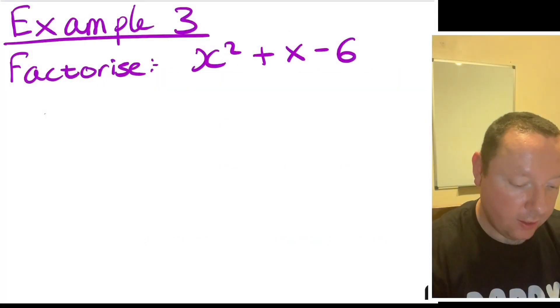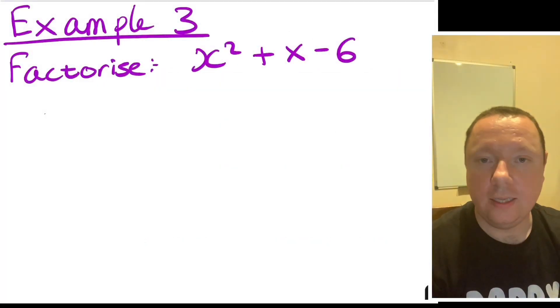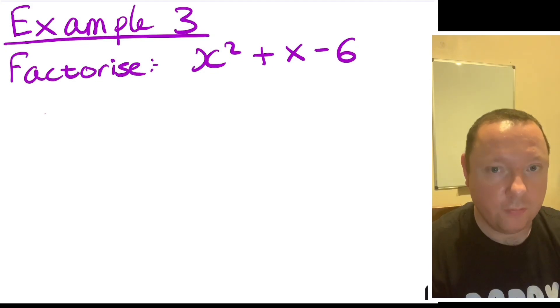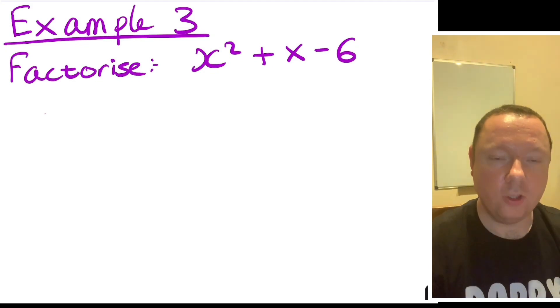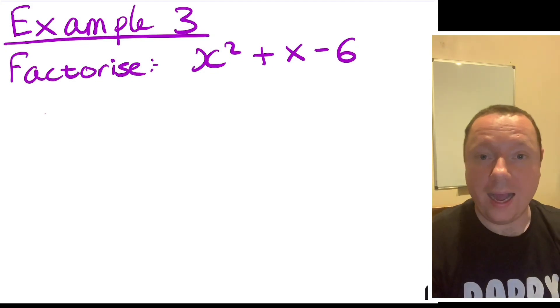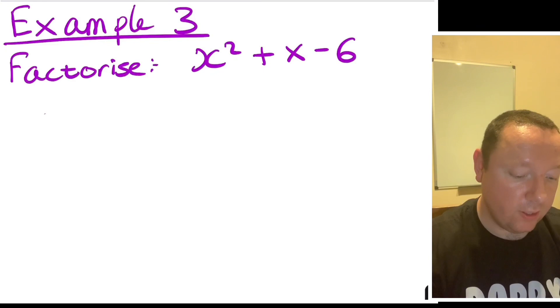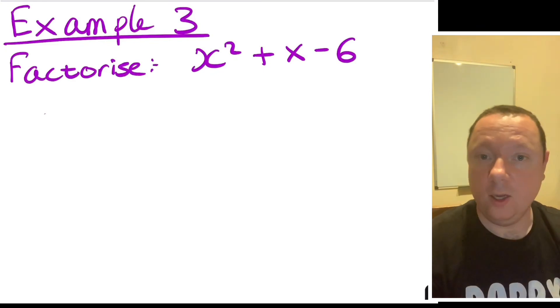Now Example 3: factorise x squared plus x minus 6. You'll notice a difference this time — the first examples were all add, add, add, but now we have an add and a takeaway, so we need to be careful with our signs.